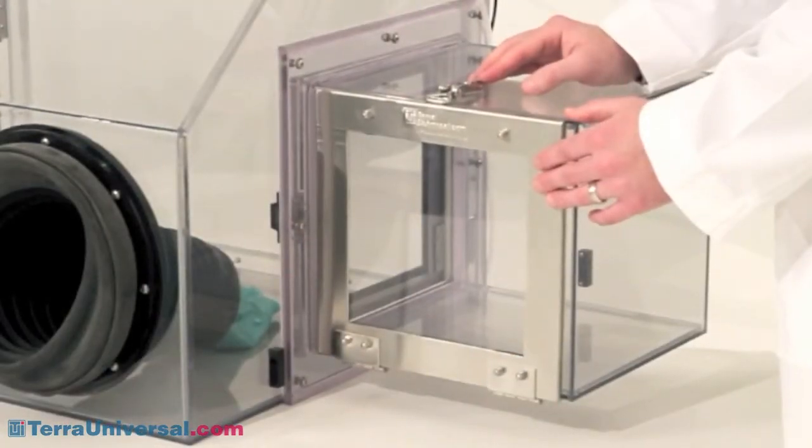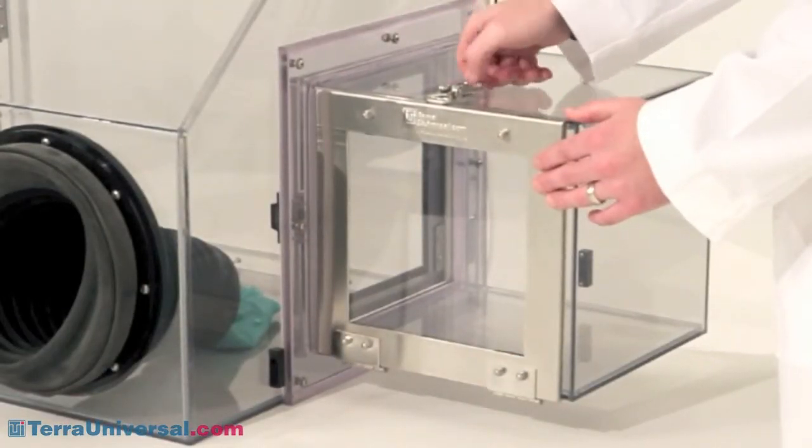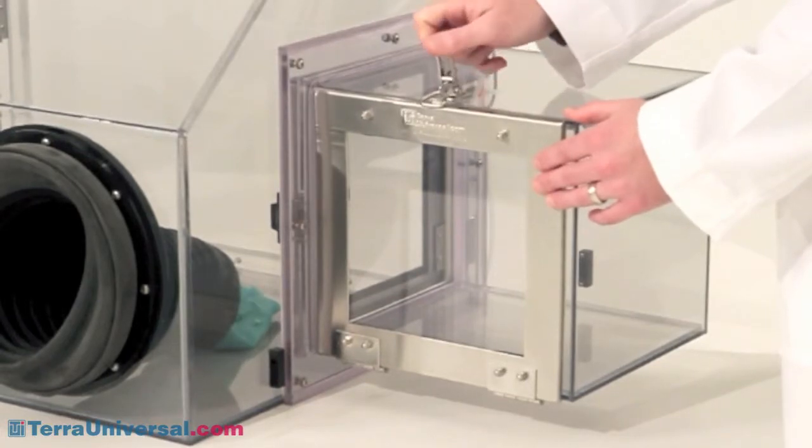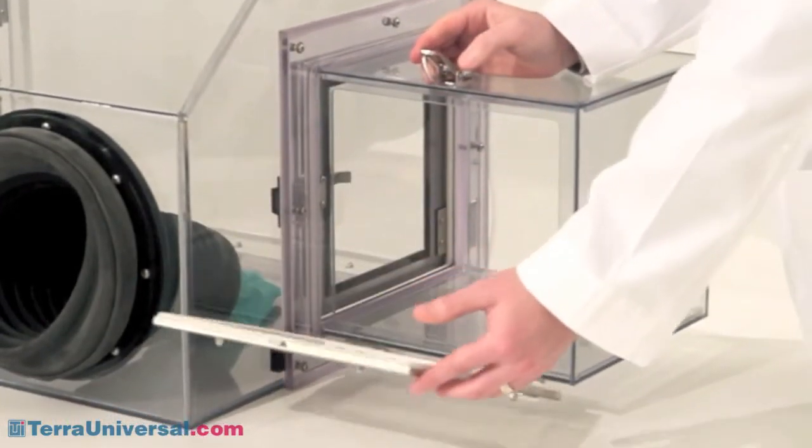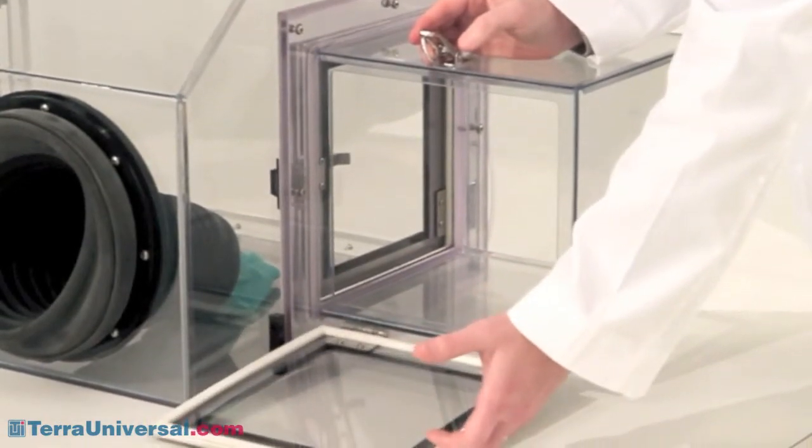Airlocks can be mounted on either the right or left side of the smart glove box. These transfer chambers feature draw latches that allow you to introduce and remove small parts from the main processing chamber.